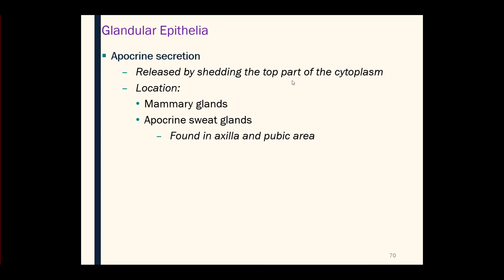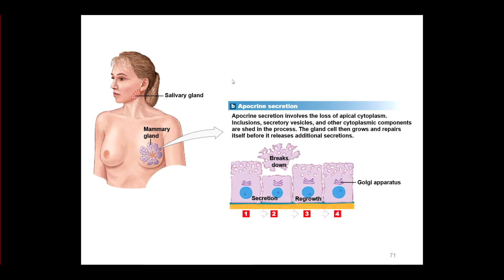The second mode of secretion is apocrine secretion. Here, the top of the glandular cell actually pinches off, and that top part of the cell becomes part of the secretion. For example, in a mammary gland: the nucleus and Golgi apparatus produce secretory vesicles, but instead of releasing the product by exocytosis, the top of the cell pinches off and breaks away from the rest of the cell, then breaks down and becomes part of the secretion.